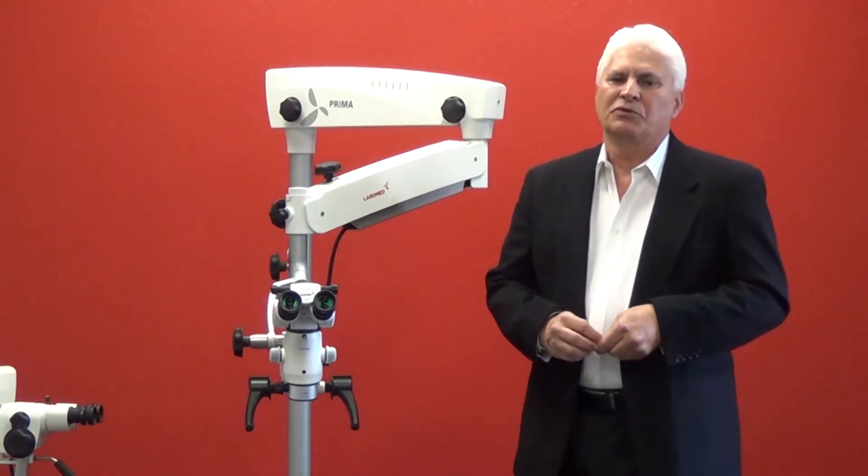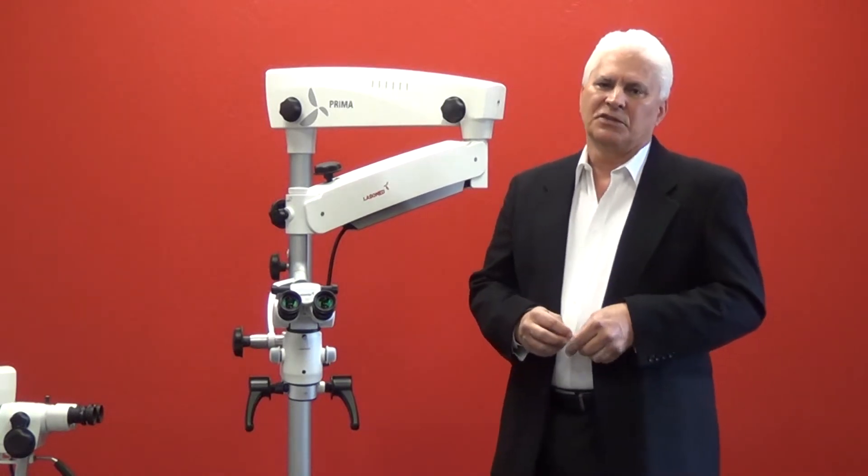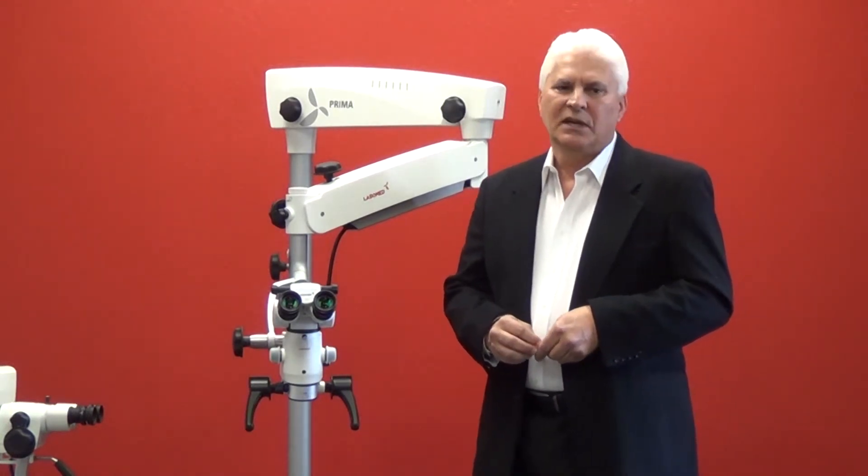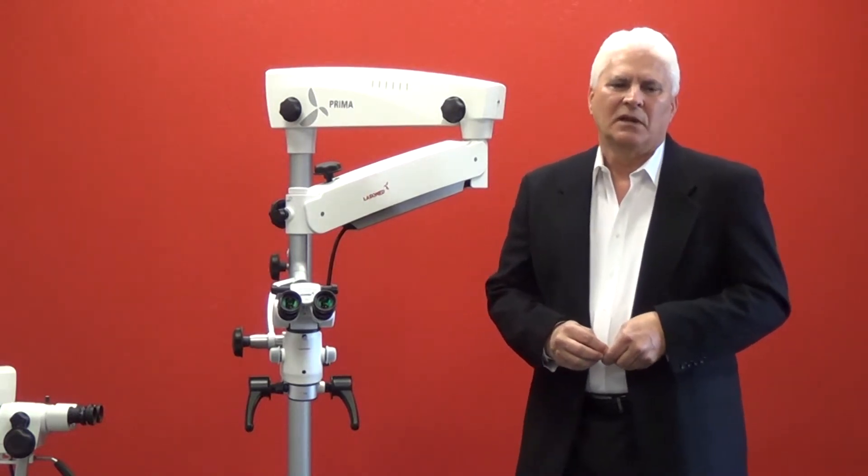The Prima line uses a superior bright LED that produces well over 80,000 lux, brighter than most conventional halogen and xenon sources, and lasts an unprecedented 60,000 hours. This creates the possibility of never having to change a bulb in the lifetime of the microscope.